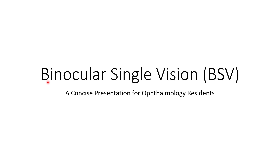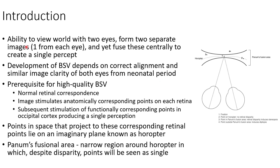Hello guys, this is Indian Medico and in this video we are going to discuss about binocular single vision or BSV. Binocular single vision is the ability to view the world with two eyes, form two separate images — one from each eye — and yet fuse these centrally to create a single percept. Development of BSV depends on correct alignment and similar image clarity of both eyes from the neonatal period.